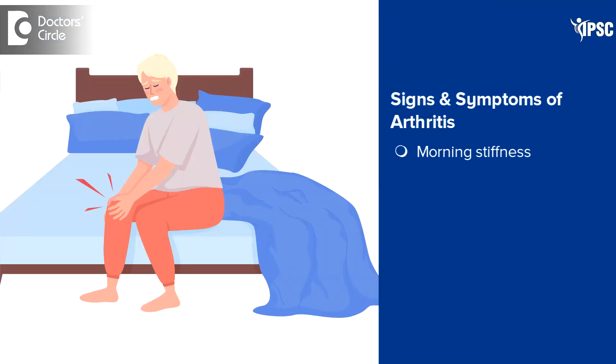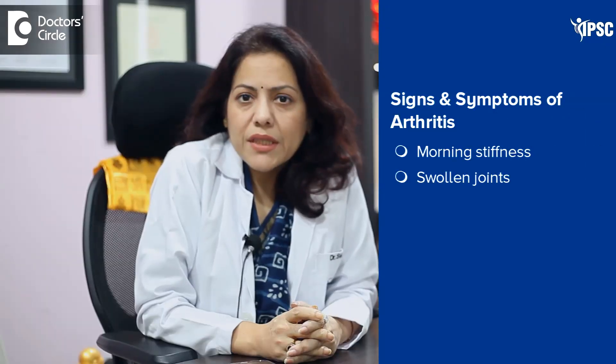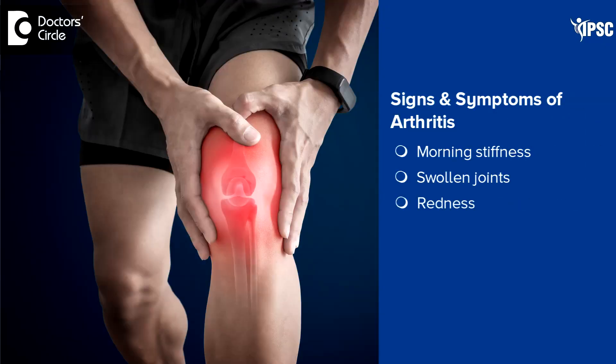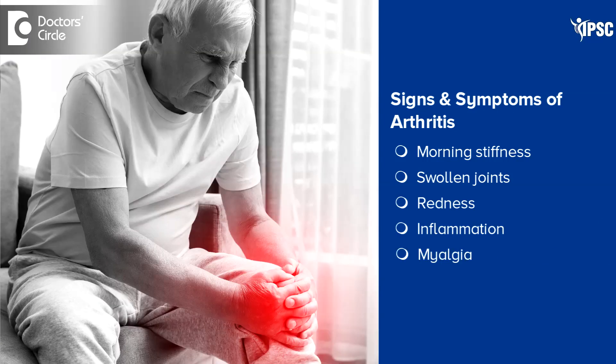Arthritis pain is very common in today's population. The common signs and symptoms of arthritis pain are morning stiffness, swollen joints, redness, inflammation — which are signs of inflammation — and myalgia, what we call muscle pain. These are most of the common symptoms associated with arthralgias or arthritis.